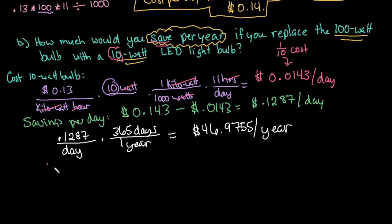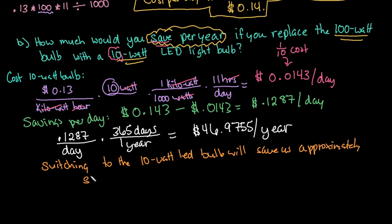So we can say that switching to the 10-watt LED bulb will save us approximately $46.98 per year. And I got the 98 cents because I rounded the 9-7. I rounded that 7 up since the number after it was a 5. So just make sure that usually when we're explaining it, we put it in what makes sense so it makes sense to round it at the end.